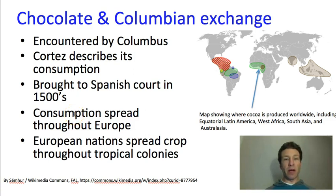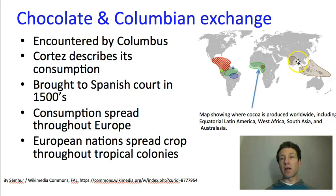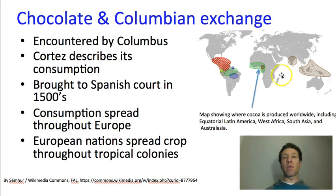Consumption of the drink spread throughout Europe. Because Europeans at this time were colonizing throughout the tropics, each European state started developing chocolate plantations in whichever region they controlled that had an appropriate climate. Chocolate plantations spread to West Africa, as well as South Asia (India), and the islands north of Australia. There are now many places where chocolate is grown. Out of these places, the one that grows the most chocolate is actually the West African region.